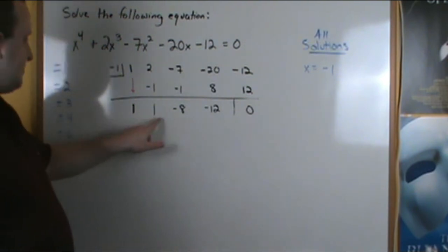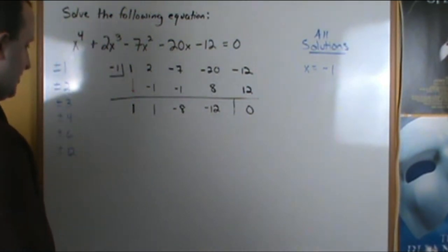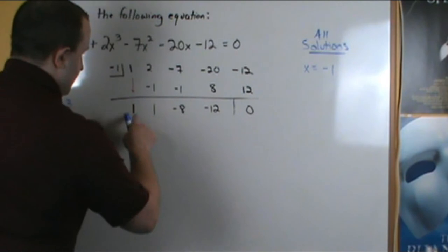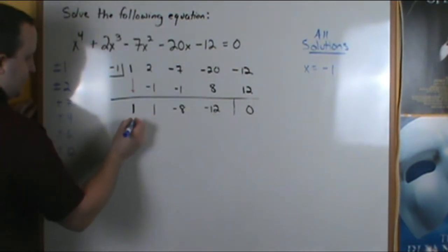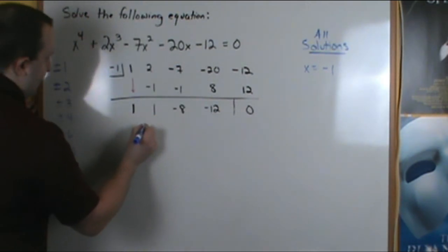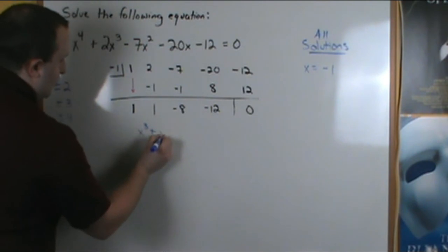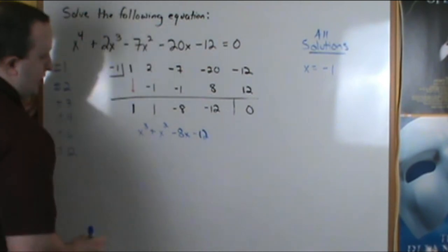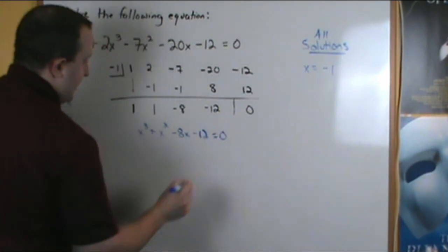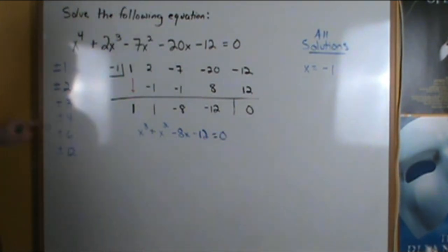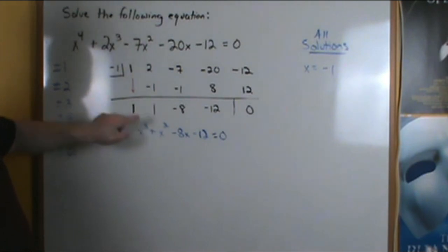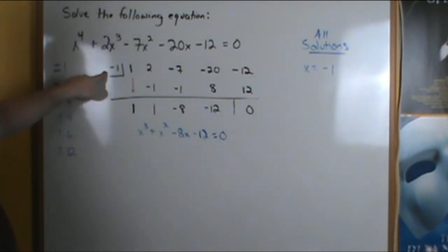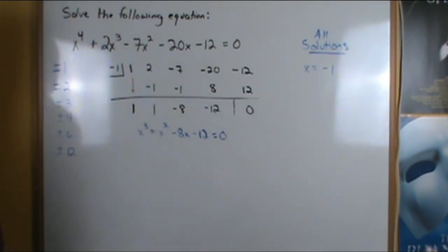Now this polynomial here with these coefficients, this is called a depressed polynomial. So our coefficients are going to be 1x cubed plus 1x squared minus 8x minus 12. And we can solve that equation when it equals 0 using the remaining factors. We established 1, positive 1 is not a factor, so we can't test positive 1 here. We established negative 1 as a factor already. So let's move on to plus or minus 2.